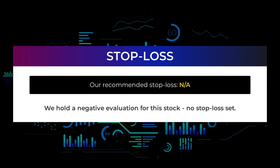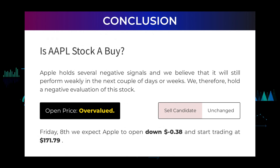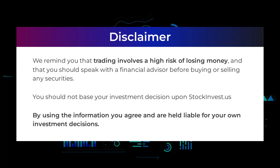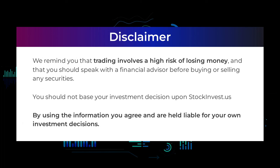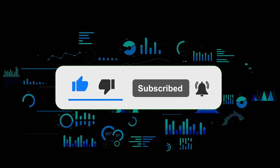We hold a negative evaluation for this stock, no stop-loss set. Apple holds several negative signals and we believe it will still perform weakly in the next couple of days or weeks; we therefore hold a negative evaluation of this stock. After analyzing the volatility and movements for the last trading day, our systems find that the current price is overvalued. For trading on Friday the 8th, we expect Apple to open down negative 38 cents and start trading at $171.79. We remind you that trading involves a high risk of losing money and that you should speak with a financial advisor before buying or selling any securities. You should not base your investment decision upon stockinvest.us. By using the information you agree and are held liable for your own investment decisions. That's the end of this video — thanks for watching. Leave a comment if you have any questions and don't forget to subscribe to the channel.